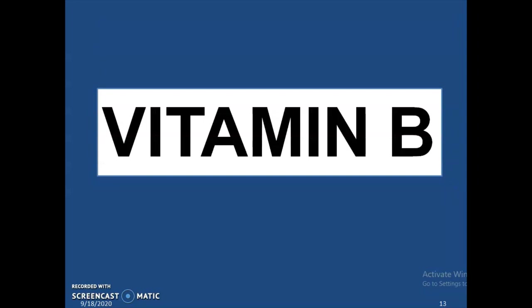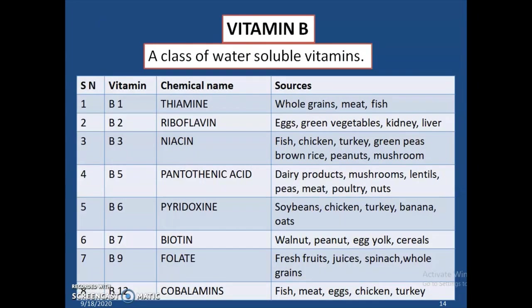Vitamin B is a group of vitamins: B1, B2, B3, B5, B6, B7, B9, and B12. B1 is known as thiamine, found in whole grains, meat, and fish. B2 is known as riboflavin, found in eggs, green vegetables, and liver. B3 is known as niacin, found in fish, chicken, turkey, green peas, brown rice, peanuts, and mushrooms.